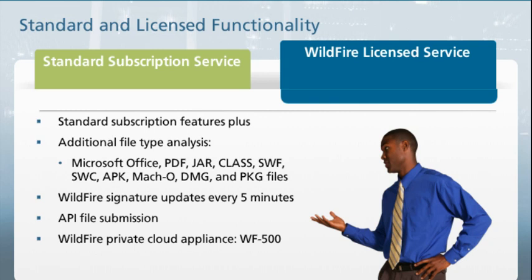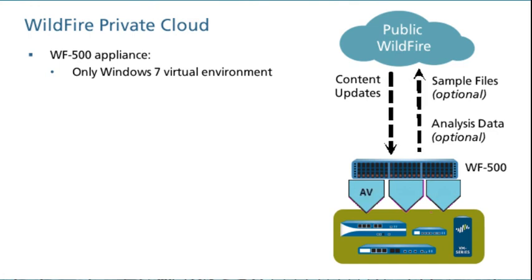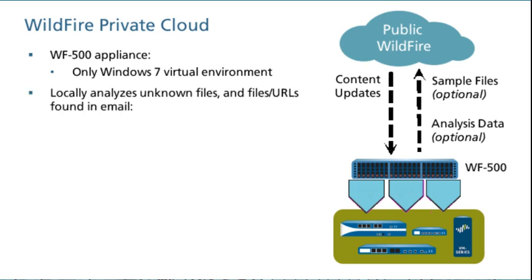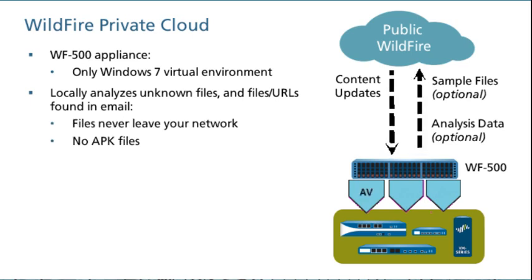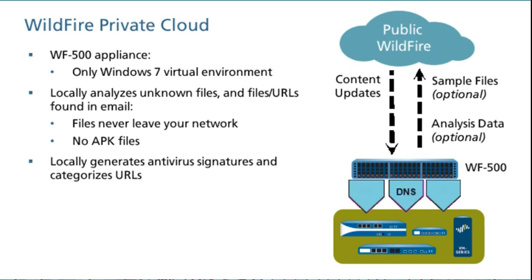A Wildfire license entitles a firewall to use the WF500 appliance as a Wildfire private cloud service. The WF500 appliance is a Wildfire private cloud solution. It supports a Windows 7 virtual environment and requires that you install a Windows 7 64-bit image on the appliance. The WF500 appliance analyzes files forwarded from your Palo Alto Networks firewalls or from the Wildfire API. Beginning with PanOS 6.1, the WF500 appliance can generate signatures locally and categorize URLs. Benign and grayware files that it analyzes never leave your network. By default, the WF500 appliance never sends malware files outside of your network.